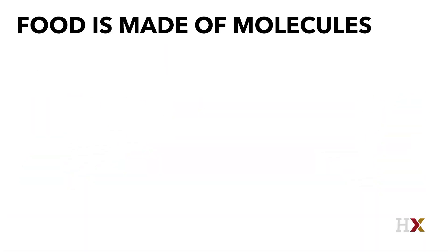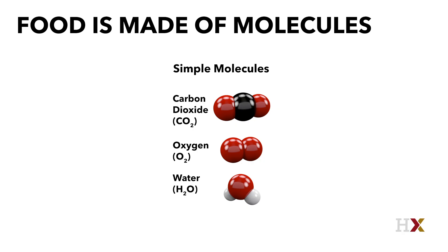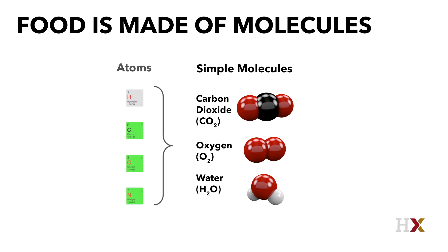Now there are simple molecules — the molecules in the air around us, for example carbon dioxide, oxygen, and water. These are simple molecules, and they are of course themselves composed of atoms. So carbon dioxide is composed of carbon and oxygen. Water is composed of hydrogen and oxygen, and so on.